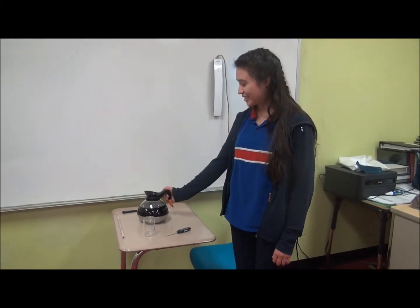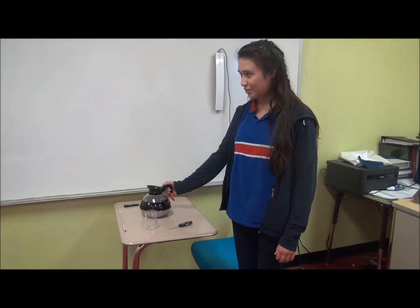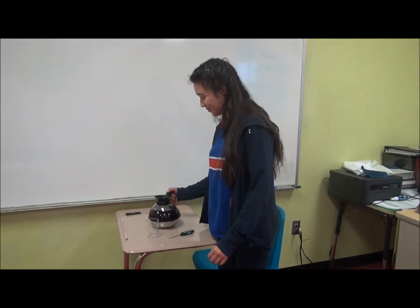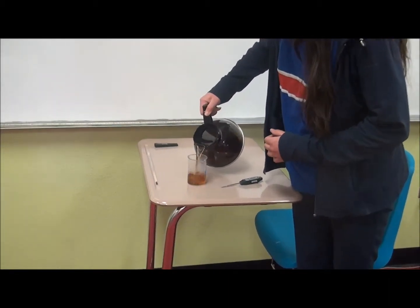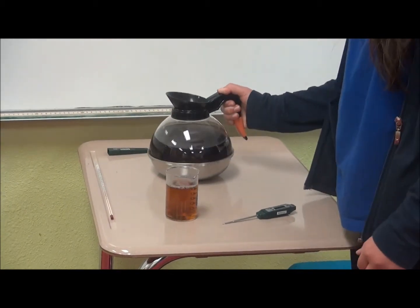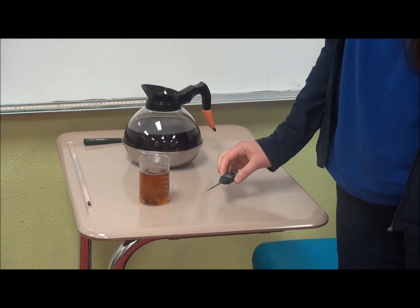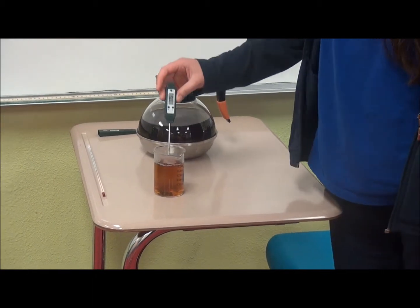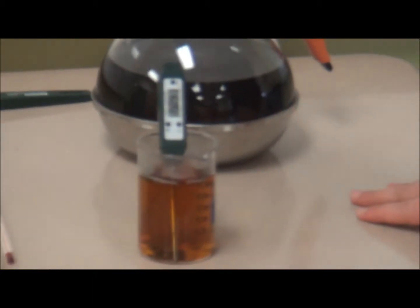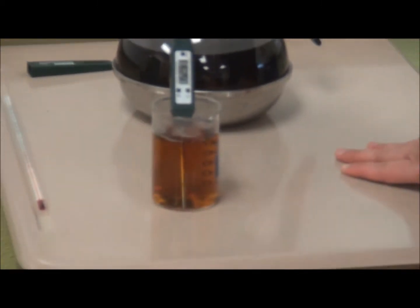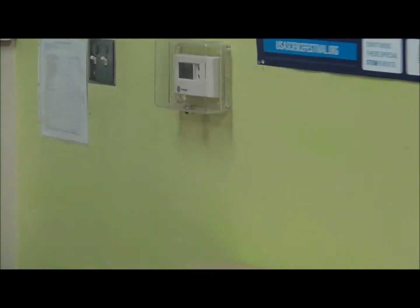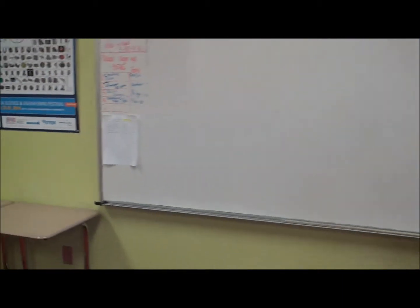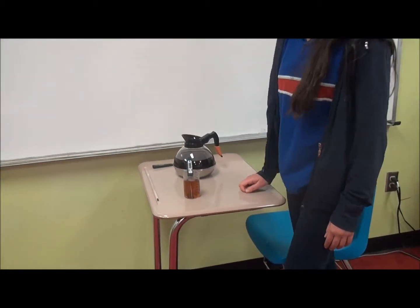So first I'm going to pour this coffee into the beaker. And then I'm going to check its temperature. You should also keep in mind that the surrounding temperature on the thermostat is 73 degrees Fahrenheit. Right now the temperature is 152 degrees Fahrenheit.